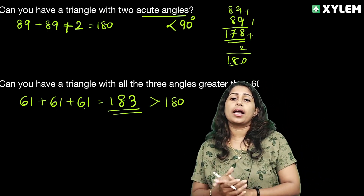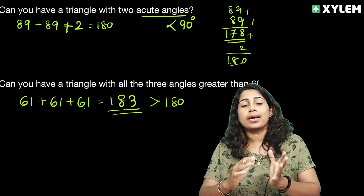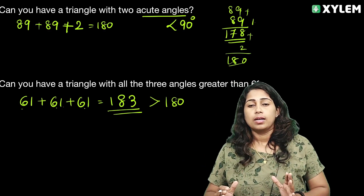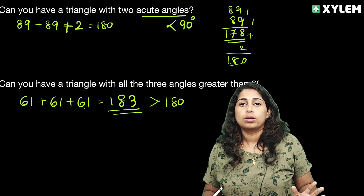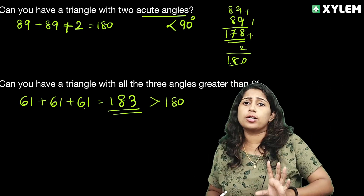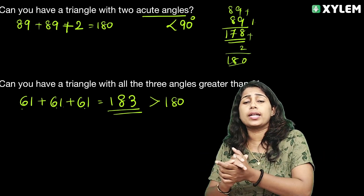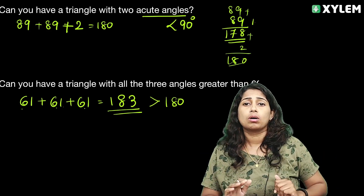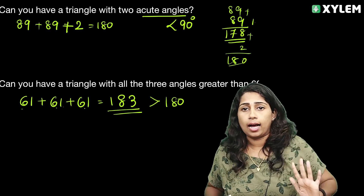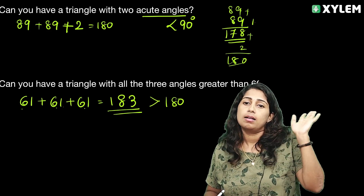183 is greater than 180, so this is not possible. When all three angles are greater than 61, the sum exceeds 180. Therefore, a triangle with all three angles greater than 60 degrees is not possible.